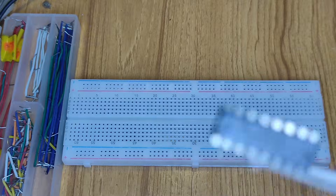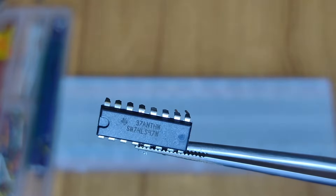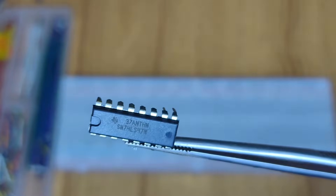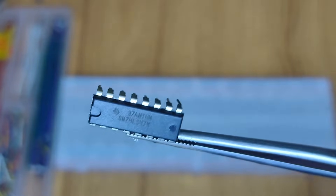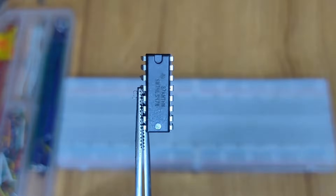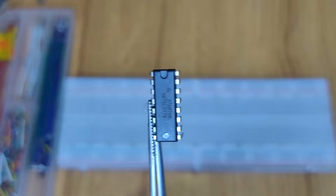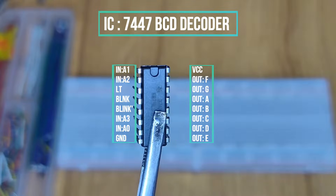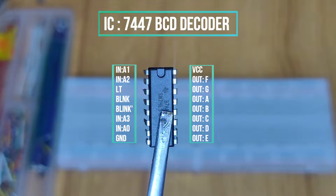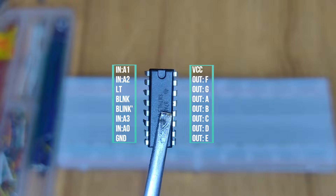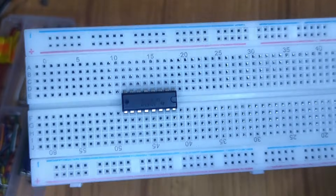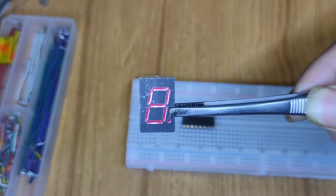First, take a breadboard for IC placement. This is the 7447 IC — it has 8 pins on each side, 16 pins total. The left-side pins are the input side and the right-side pins are the output side, labeled A, B, C, D, E, F, G. Now I'm placing the IC on the breadboard.